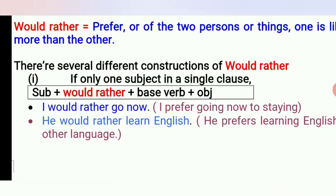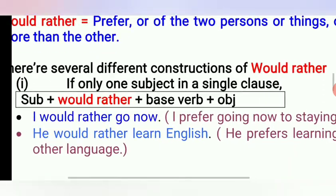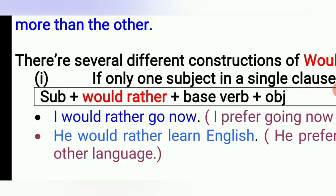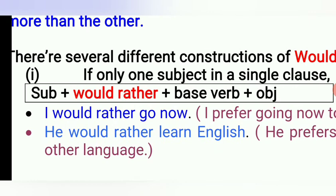The first construction: if there is only one subject in a single clause, then the structure of 'would rather' is — Subject + would rather + base verb + Object. Now let's come to the examples. The first one: 'I would rather go now.'